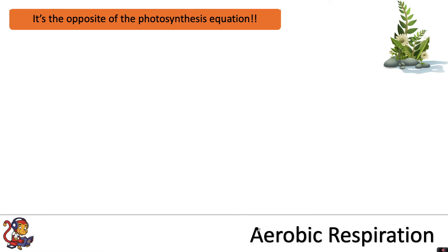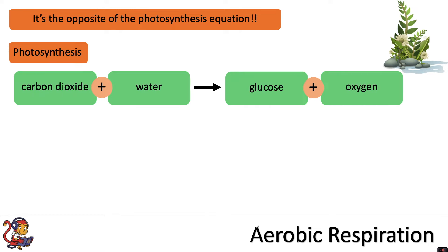You may have noticed that respiration is the opposite of the photosynthesis equation. In plants, photosynthesis is the process whereby plants make their own food — glucose. In the equation for photosynthesis, plants take in carbon dioxide and water and produce glucose and oxygen.